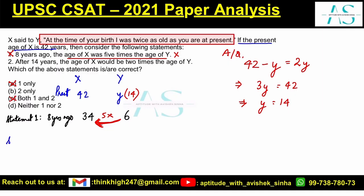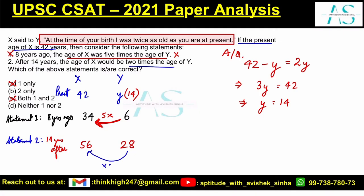Let's look at Statement 2. After 14 years: add 14 to both ages. X's age = 42 + 14 = 56, and Y's age = 14 + 14 = 28. The statement says X would be 2 times the age of Y: 28 × 2 = 56. This matches exactly, so Statement 2 is absolutely correct.